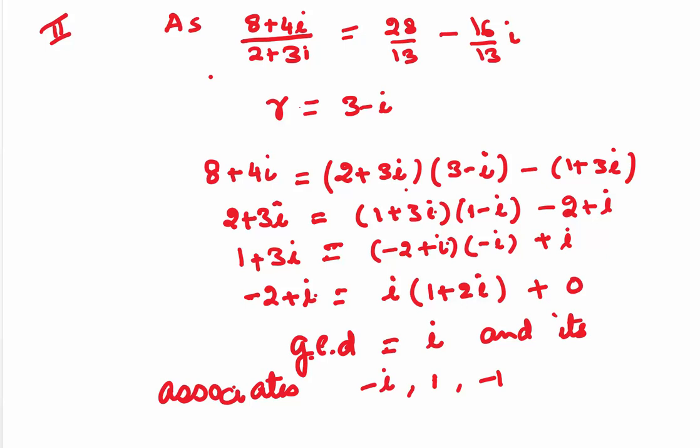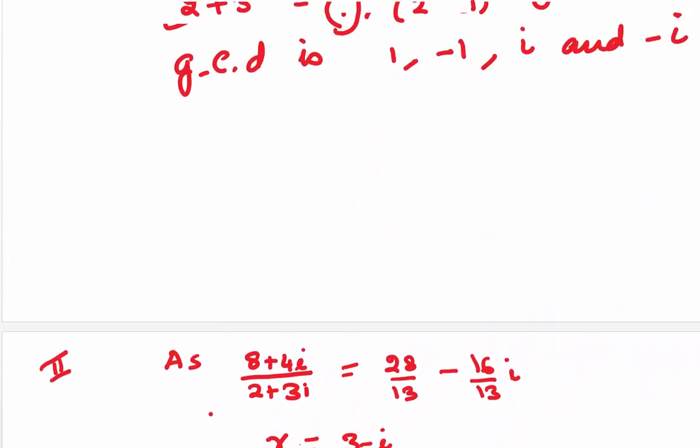So, as you are aware, 8 plus 4i upon 2 plus 3i was 28 by 13 minus 16 by 13i. Now, if I round off and take gamma to be 3 minus i, the steps which we would be getting in Gaussian division algorithm are given here. And you will see that at every stage, your norm, the condition would be satisfied. Here, the GCD again comes out to be i and its associates which are nothing but minus i, 1, minus 1. So, these are the same as what we got earlier.